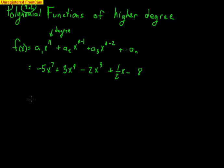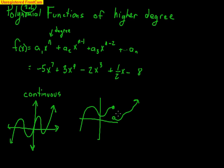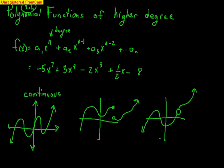One key aspect about all polynomial functions is they are what we call continuous. A continuous polynomial function has no gaps in its graph — you can draw it smoothly without lifting up your pen. A non-continuous function would have a gap or a hole in the graph. Basically, if you have to pick up your pen in order to draw it, it's not continuous.